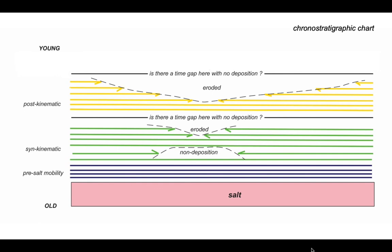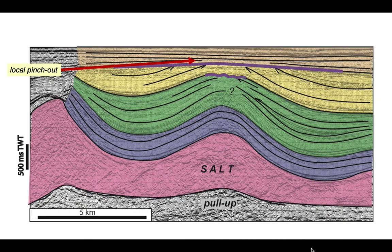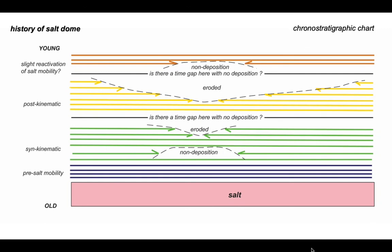So there's our unconformity again. We ask the question, is there a time gap associated with this unconformity? And there's local pinch out in the brown onto the crest of a dome structure above the salt dome itself. And we can represent this on the chronostratigraphic chart like this, and it may suggest that the salt dome reactivated later.